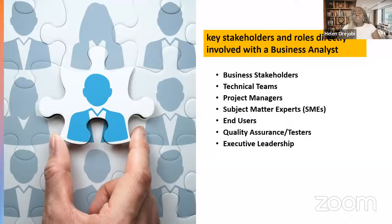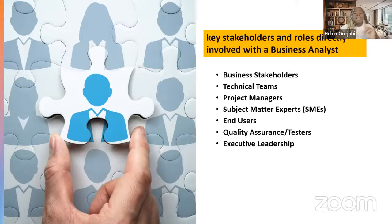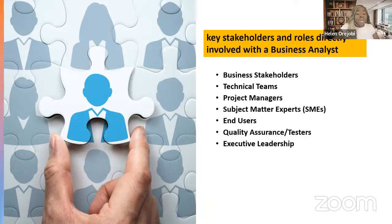Key stakeholders and roles directly involved with a business analyst. In the life of a business analyst, there are several key stakeholders and roles involved. Number one: business stakeholders. These are individuals or groups within the organization who have a vested interest in the outcome of the project. They provide the business requirements and goals the project aims to achieve. Business stakeholders may include executives, managers, department heads, and end users. They all want the success of the project.